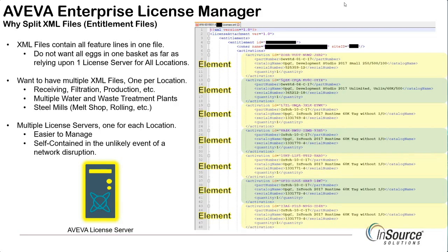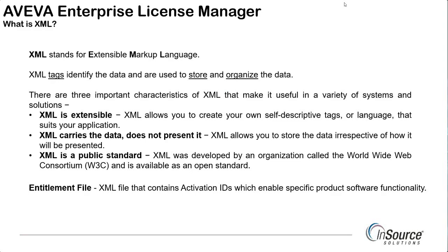We might end up splitting them out into multiple locations within a site — much like you have a melt shop at a steel mill and a rolling shop at a steel mill — and they need to be responsible for their own licenses rather than having to rely on a central location for that license server. In this case we end up having multiple license servers at each location. We can still take advantage of license redundancy if needed, and in this case they are self-contained in the event of any type of network disruption.